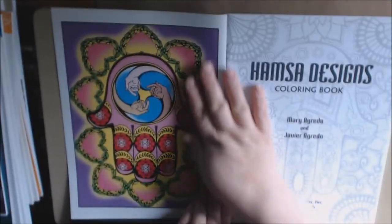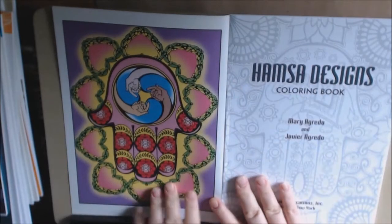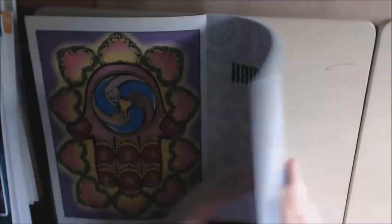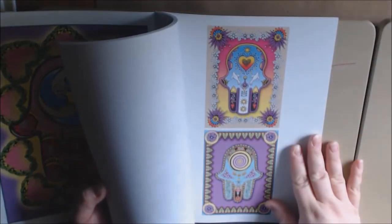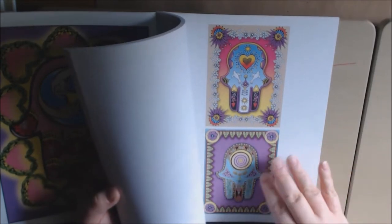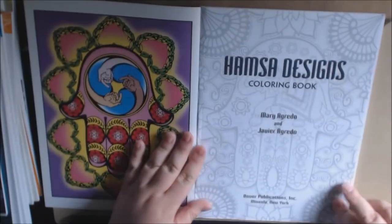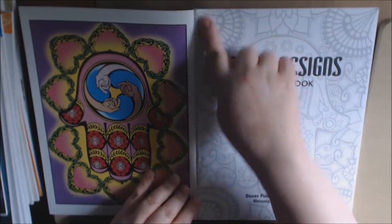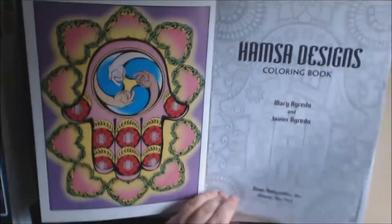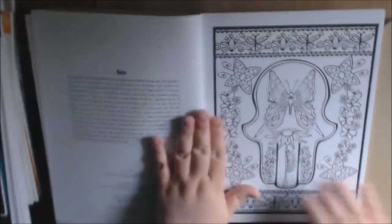With all Creative Haven books, you get a colored version on the inside cover and on the outside covers, which is a good little guide, and they're very pretty. They are single-sided and they are perforated, which is great if you want to cut them out.